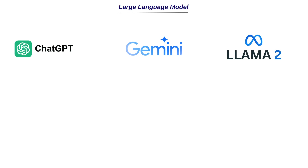We know that there are a lot of LLMs today. We have ChatGPT by OpenAI, which came first, and then we have Gemini by Google, and then we have the LLAMA family of models by Meta. They launched LLAMA, then LLAMA 2 with 7, 13, and 70 billion models, and recently they launched LLAMA 3 with 8 and 80 billion. Mark Zuckerberg also said they are training a 405 billion LLAMA 3 model, which is pretty huge.